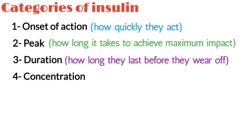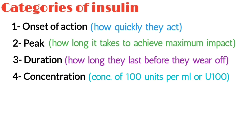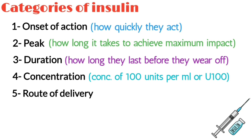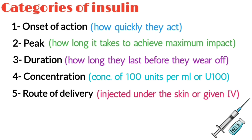4. Concentration — insulins sold in the US have a concentration of 100 units per ml, or U100. In other countries, additional concentrations are available. Note: if you purchase insulin abroad, be sure it is U100. 5. Route of delivery — whether they are injected under the skin or given intravenously.